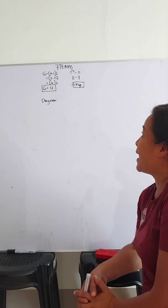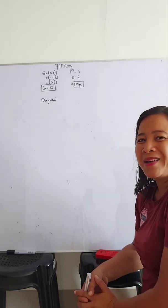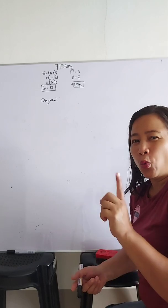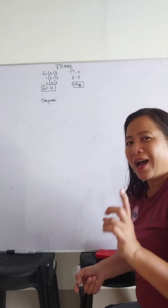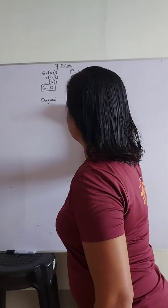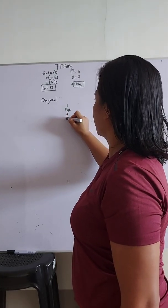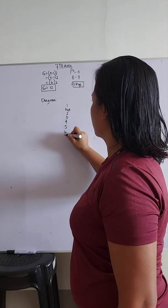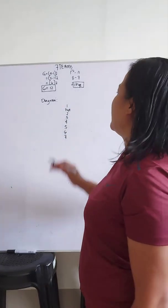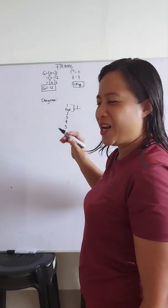For the power of 2 minus n: 8 minus 7 equals 1 bye. So out of seven teams, we have 1 bye. I'm going to place that under team 1. This is how I plot the teams, so team 1 is moved to the next round.